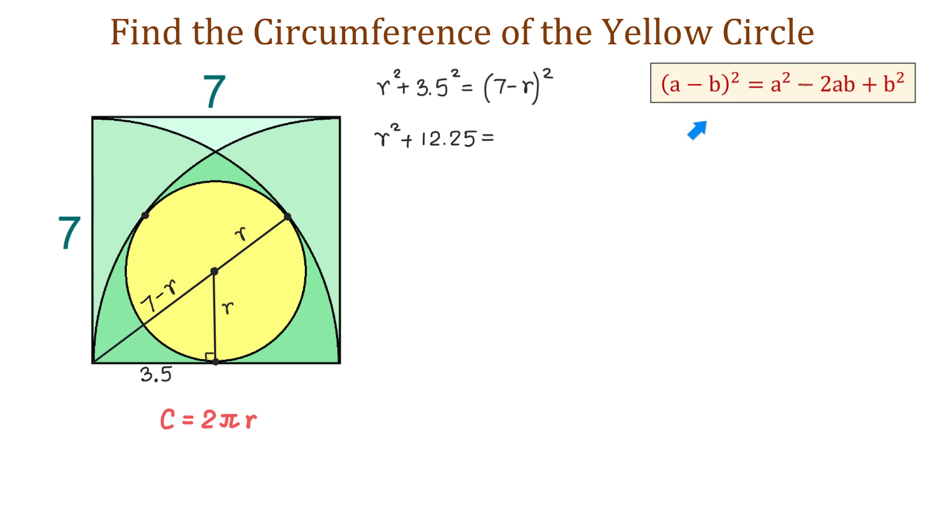The formula is (a minus b)² equals a² minus 2ab plus b². Then, using this formula, on the right side, we will have 49 minus 14r plus r².